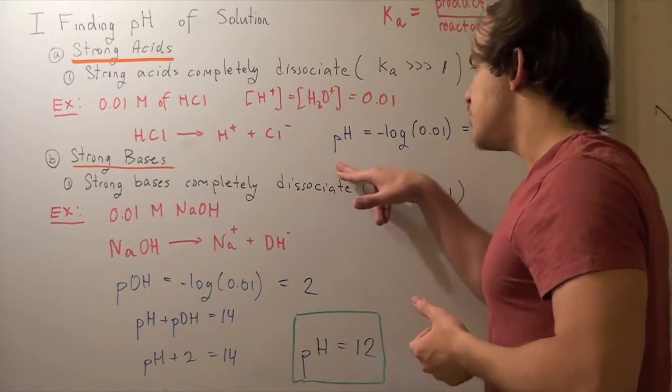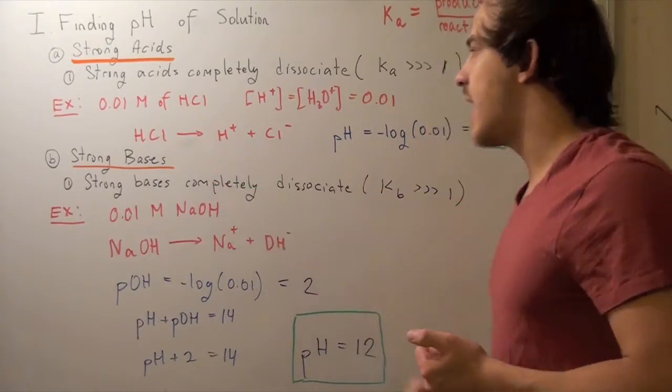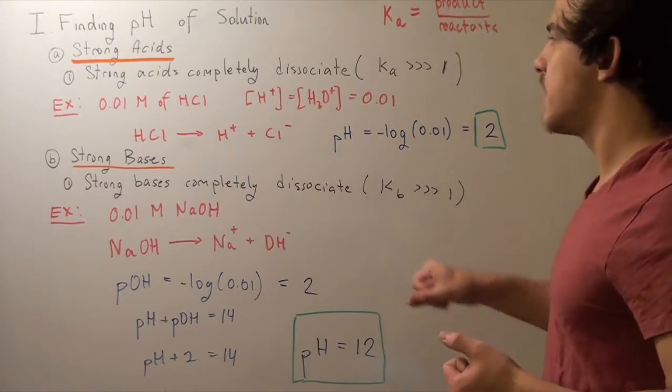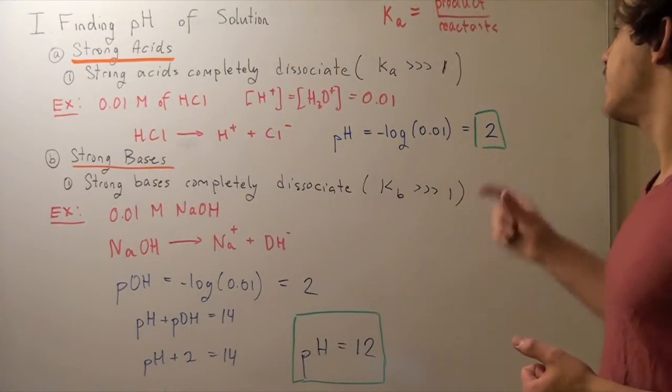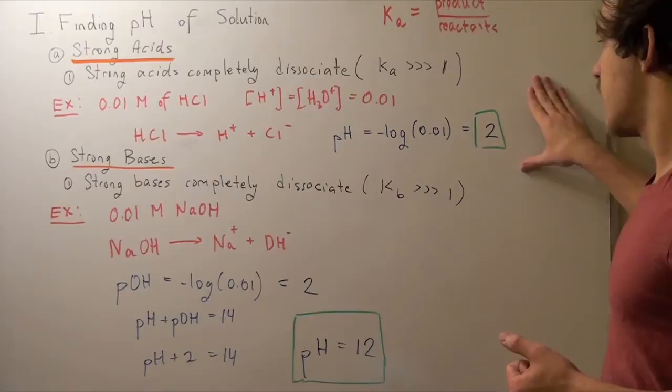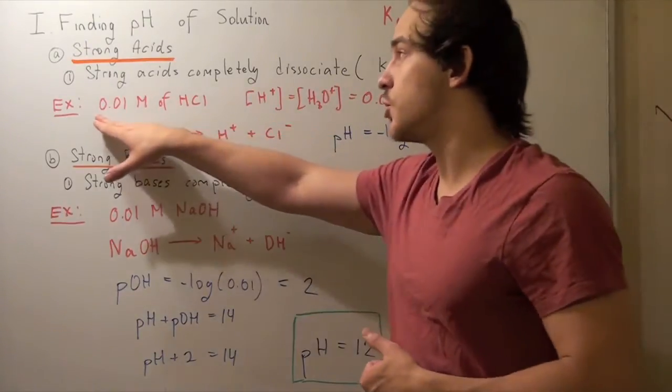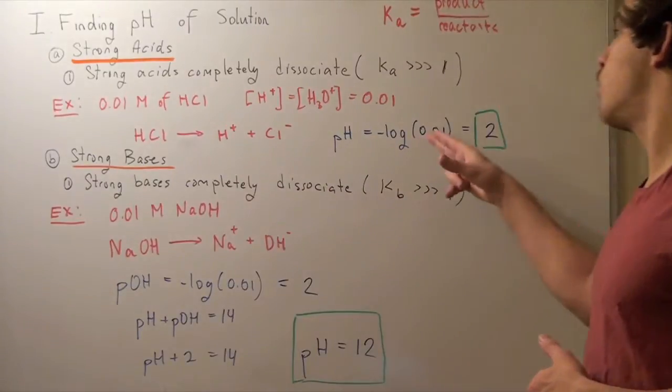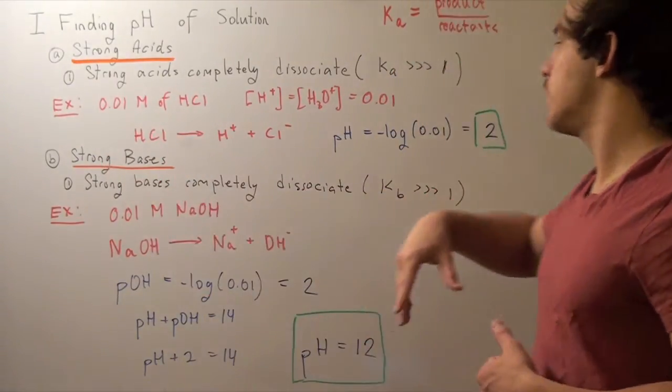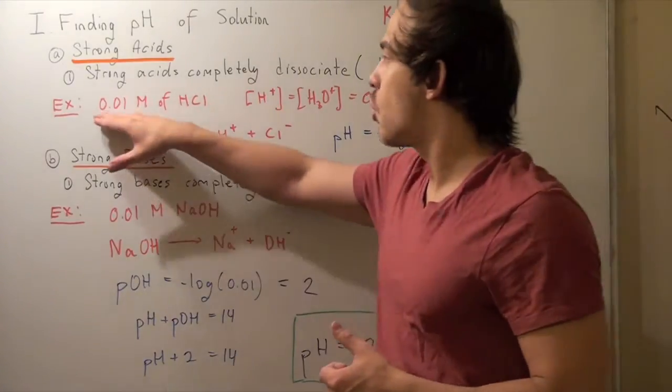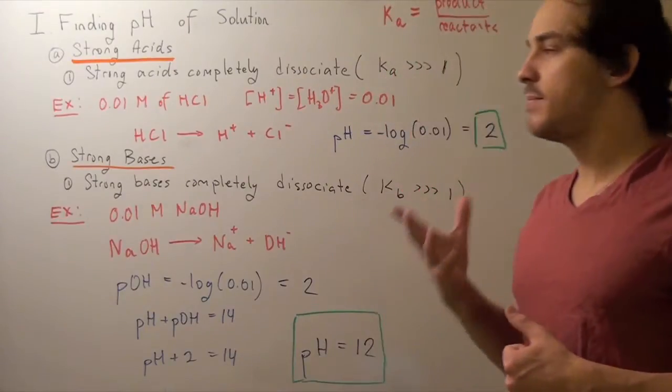Well pH is equal to negative log of the concentration of this guy. So I simply take the formula, plug in my 0.01 molar into my formula, and I get my pH. So the pH in this case is 2. If this was 0.1 molar, I plug in 0.1 molar. If this was 0.0001 molar, I plug that in as well. I use the strong acid molar concentration to find my pH.